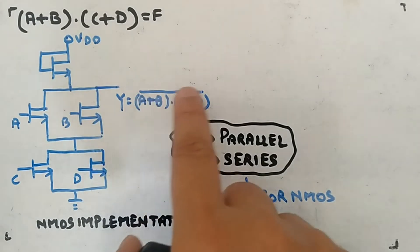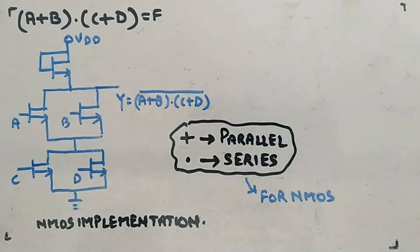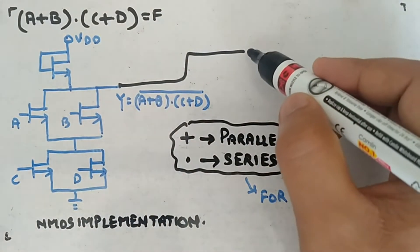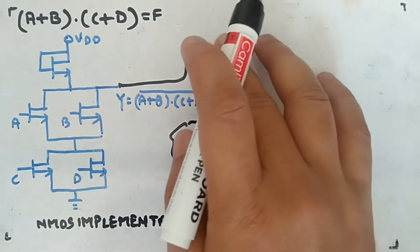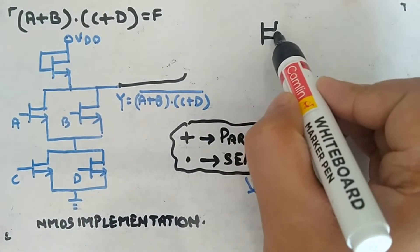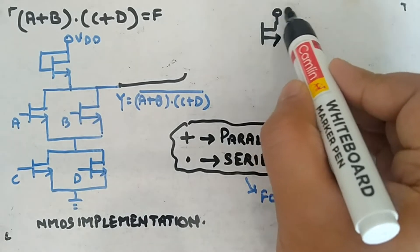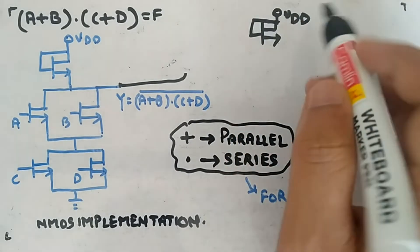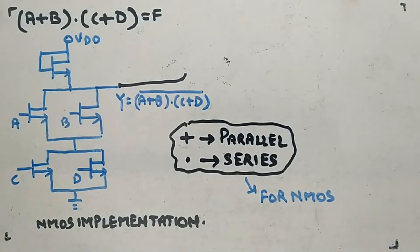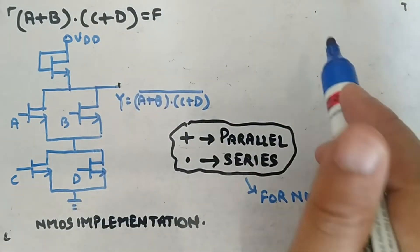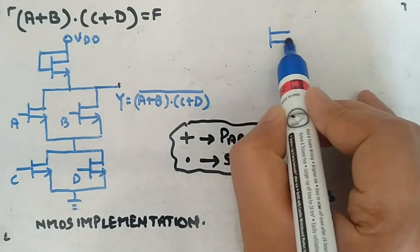What you will get at the output is (a + b)·(c + d) bar. But you want it without the bar, so you can use an inverter. Make an inverter — it will be connected to VDD like this. I'll draw it in blue to save space, so I make the active load here.